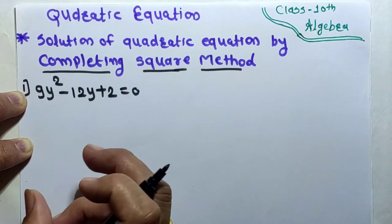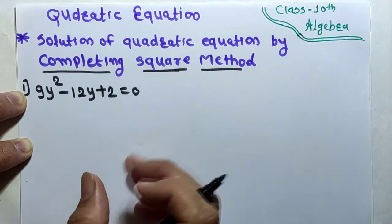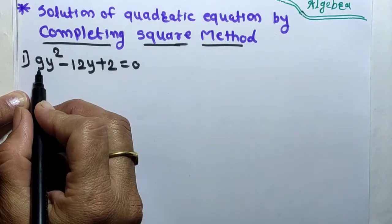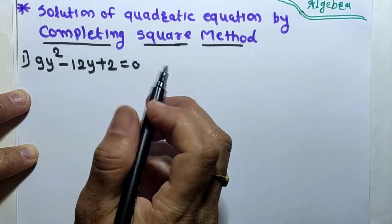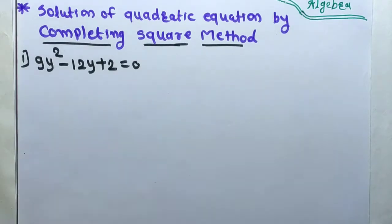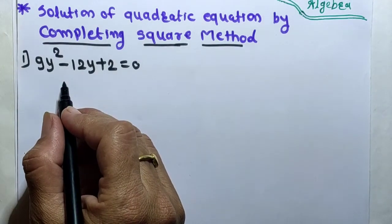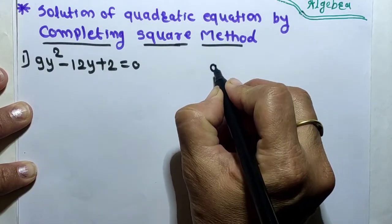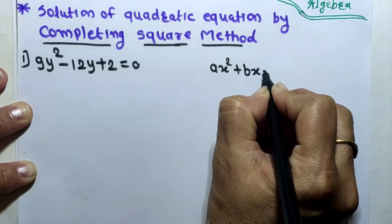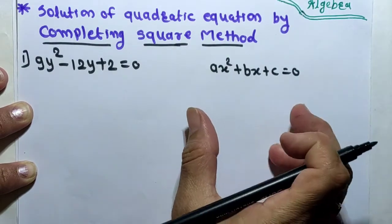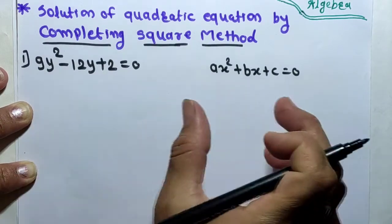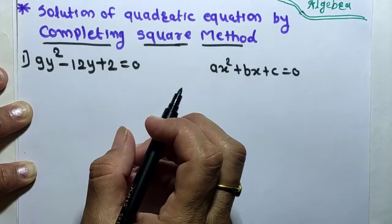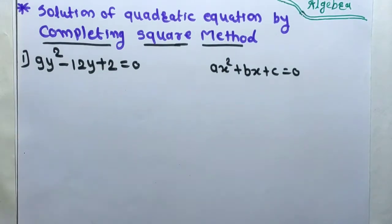Now let's start the session. The first question is 9y² minus 12y plus 2 equals 0. First we will check whether this equation is in the general form of a quadratic equation or not. The general form of a quadratic equation is ax² + bx + c = 0. We will apply the three steps.